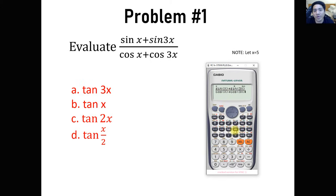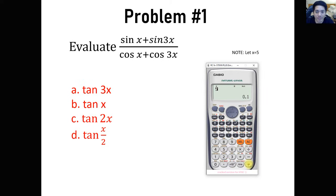What we are going to do here is use the calc mode by substituting a value of x. The calculator will ask you what value to substitute for x. In the case of trigonometric functions, we press 5. We have an answer that we're going to store to A for comparison with our choices.